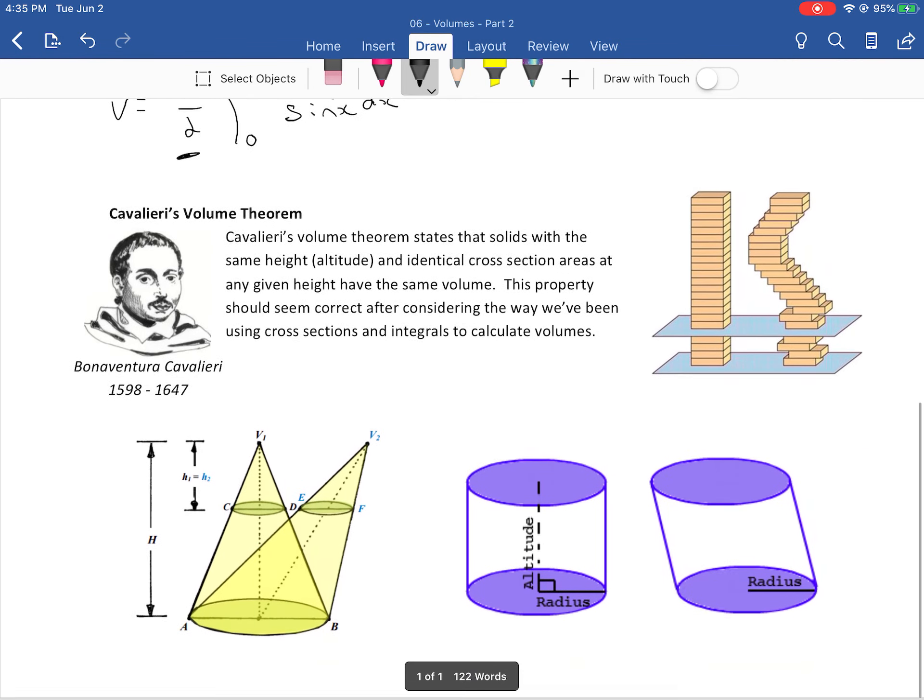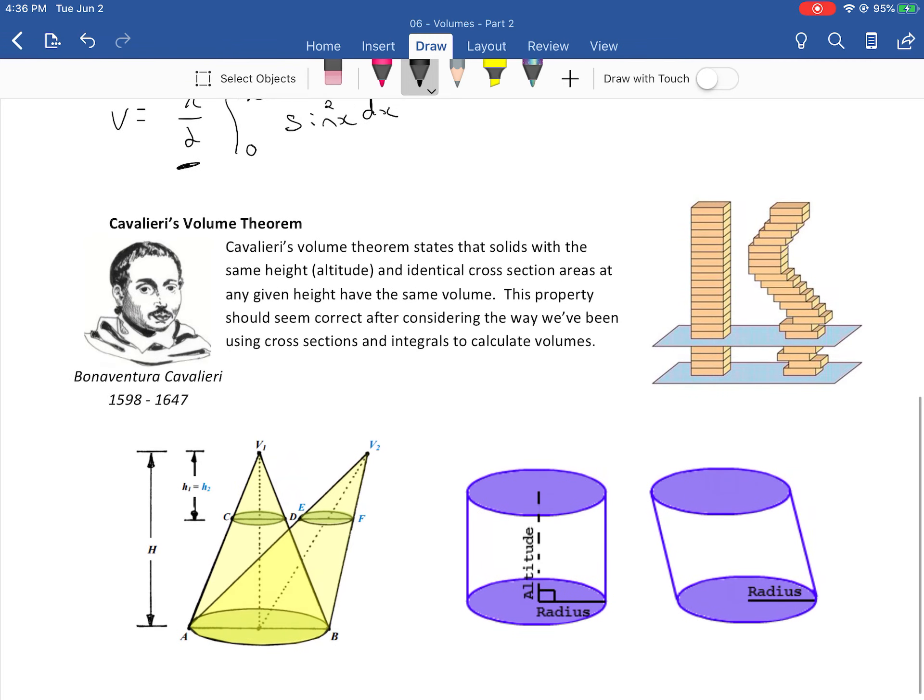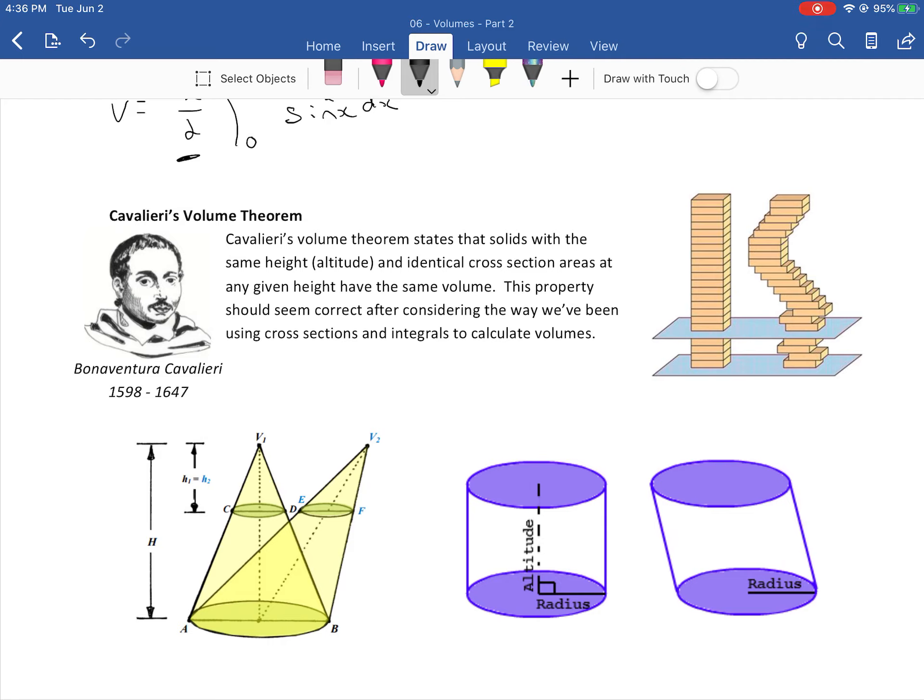Last thing today is something called Cavalieri's volume theorem. Cavalieri's volume theorem states that solids with the same height and identical cross-section areas at any given height have the same volume. This property should seem correct after considering the way we've been using cross-sections. So if you've got a shape that isn't going straight up and down like that first cone, it's sort of going off to the side. As long as it has the same height and the same cross sections all the way along, then it'll have the same volume. You don't have to worry about the fact that it's off angle like that, so use that when you get sort of weird shapes there.